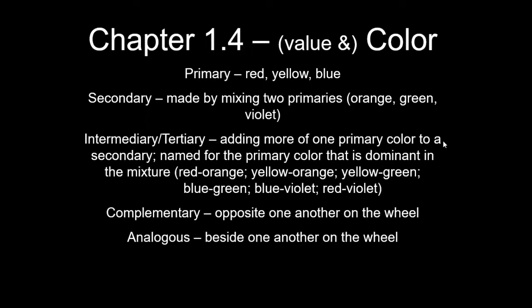Your intermediary or tertiary colors are essentially secondaries that have more of one of the primary colors in the mix. If you think of green as being 50% yellow and 50% blue, we could alter that green by having it be 75% yellow and only 25% blue — that gives us a more yellowish green. We name the tertiary colors for the primary that there's more of in the mixture, so instead of saying 'orangish red,' the correct name is red-orange. So: yellow-orange, yellow-green, blue-green, blue-violet, red-violet — always named for the dominant primary.